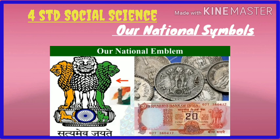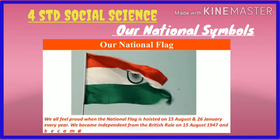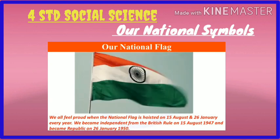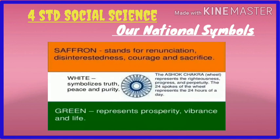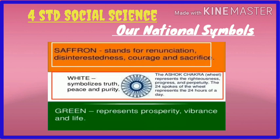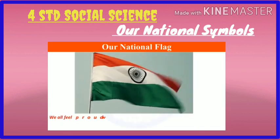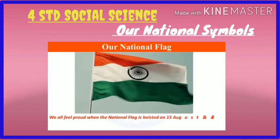Let us learn about the national symbols of India. First: our national flag. Our national flag is called the Tiranga or Tricolor. The rectangular flag has three horizontal bands of the same size. The saffron band at the top symbolizes courage and sacrifice. The white band in the middle symbolizes honesty, purity and peace. The green band at the bottom represents prosperity. There is a navy blue wheel in the center with 24 spokes, which represents the Dharma Chakra and symbolizes righteousness.